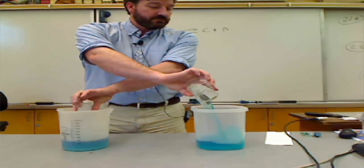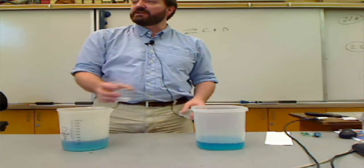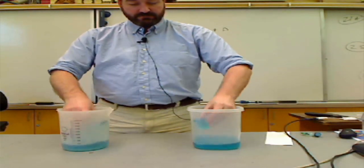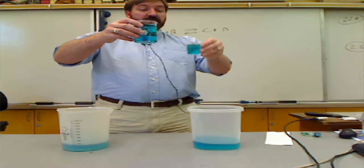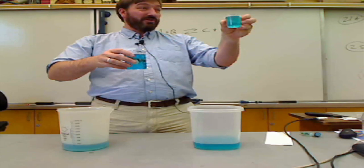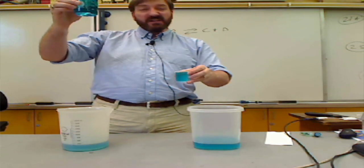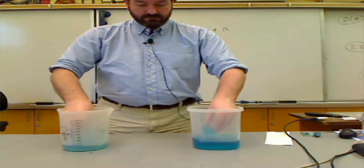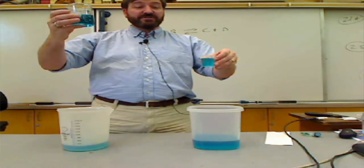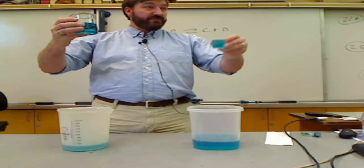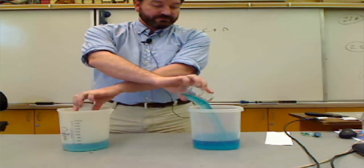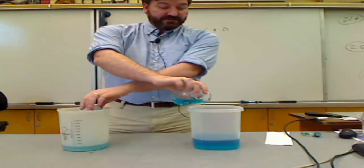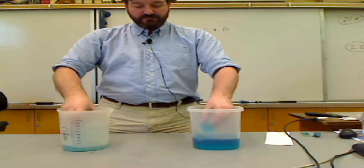When I scoop this time, I'm getting some products changing into reactants. Notice what happened to the amount in this beaker — it went down. Why? The concentration of my reactants is decreasing, so the rate is decreasing. The rate of the forward reaction is decreasing while the rate of the reverse reaction is increasing. Notice the reverse reaction is speeding up — it's getting a fuller and fuller beaker — while this one continues to go down slowly.